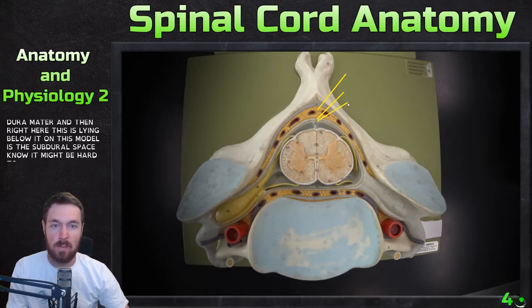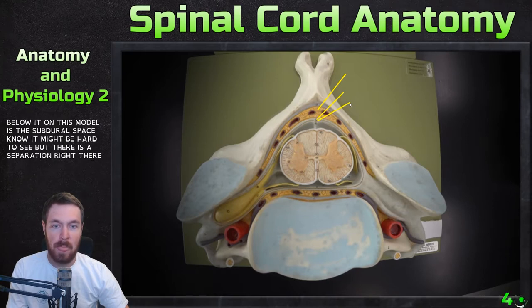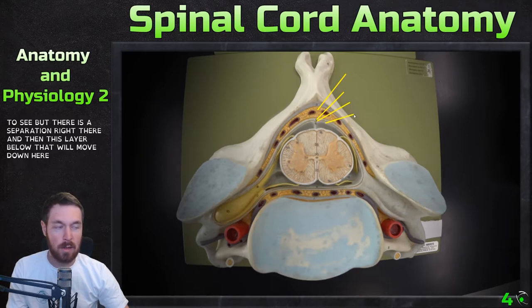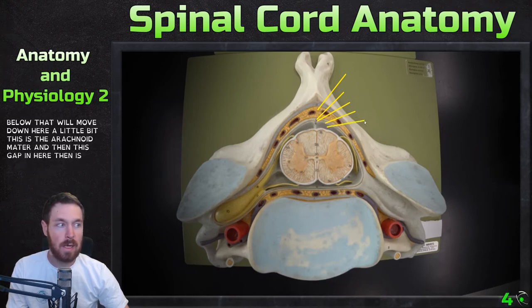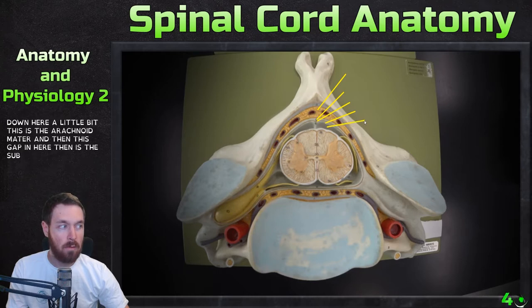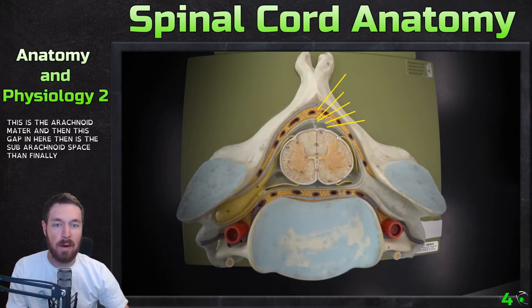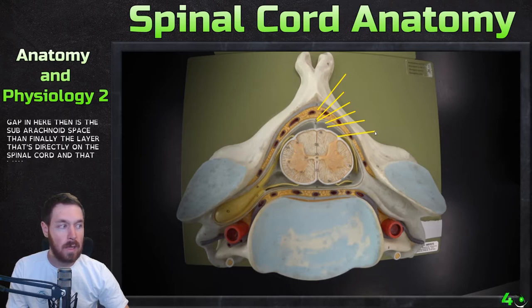Now it might be hard to see, but there is a separation right there. And then this layer below that is the arachnoid mater. And then this gap in here is the subarachnoid space. Then finally we have the layer that's directly on the spinal cord, and that one is the pia mater.